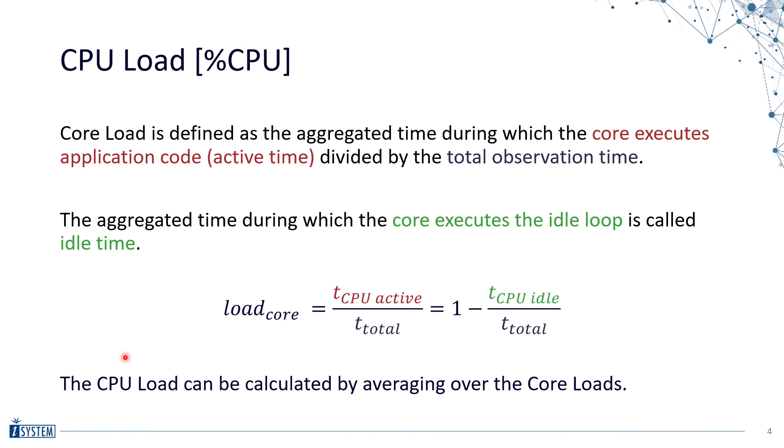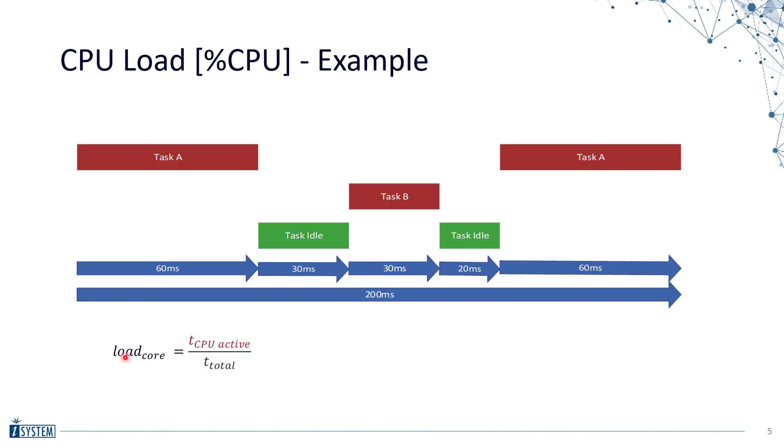Let's look at an example to make that clearer. Here we see a trace of an application over time. Different tasks are running and for each of the tasks we see how long they are running. The first step is to calculate the active time, so the time for which those tasks are running aggregated or summed up.